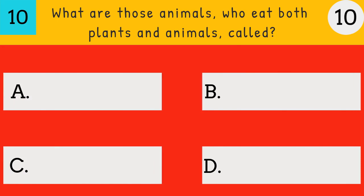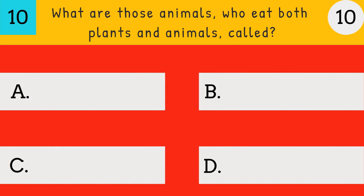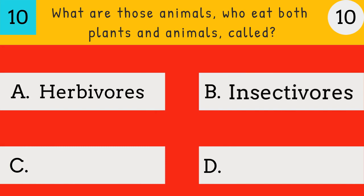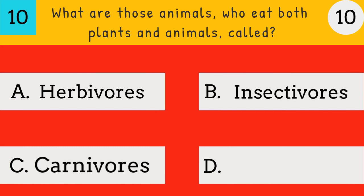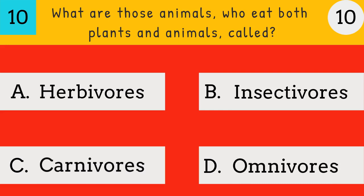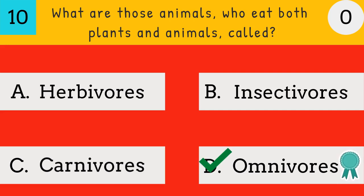What are those animals who eat both plants and animals called? Herbivores, insectivores, carnivores, or omnivores? The answer is omnivores — omnivores are those animals who eat both plants and animals.